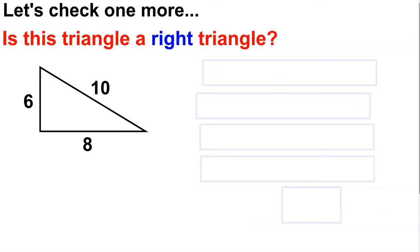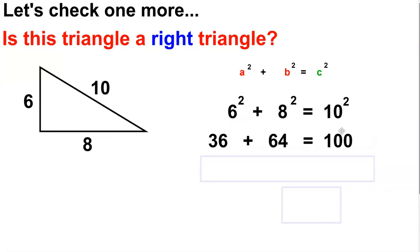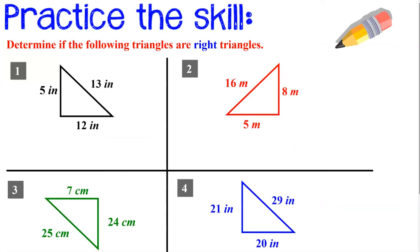One last time: identify your three sides, substitute them into the correct variables, square each of the values, and simplify. If the left and right side are equal, you have a right triangle. Pause the video and give these three a try.